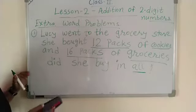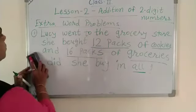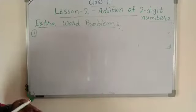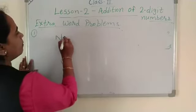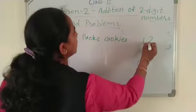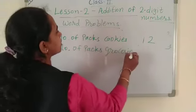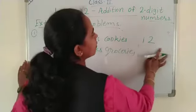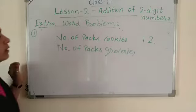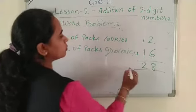Now how to add this. We have 12 packs of cookies and 16 packs of groceries. Number of packs of cookies is 12, and number of packs of groceries is 16. Add them: 2 plus 6 is 8, 1 plus 1 is 2. So total is 28.